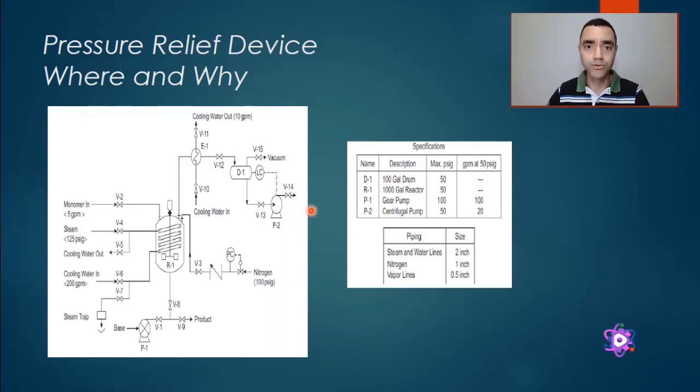So when I close the discharge of the centrifugal pump, if my maximum head is below the pressure rating of the pipeline, I don't need to add a PSV at this location.